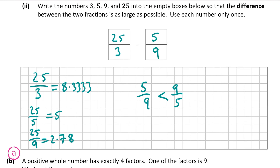So we've written the largest fraction first — 25 over 3 — and subtracted the smallest possible fraction — 5 over 9 — giving us the biggest difference possible with the numbers provided. That's part 2 of the question done. Now let's move on to the final part, part b.